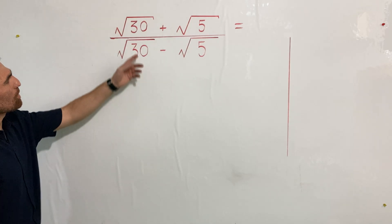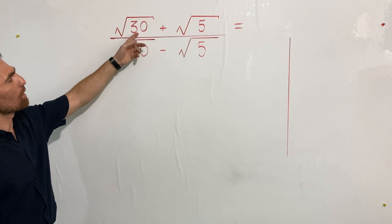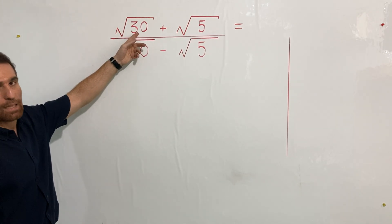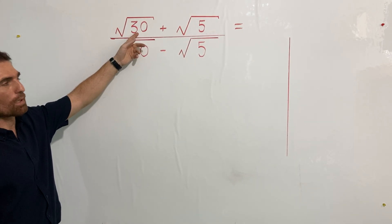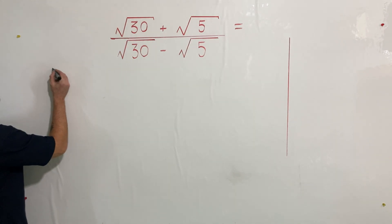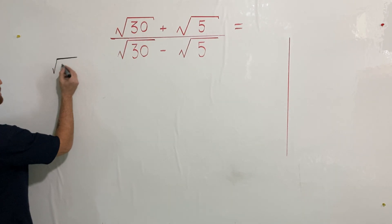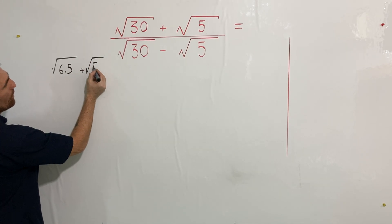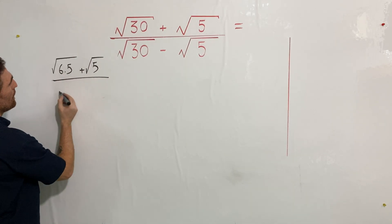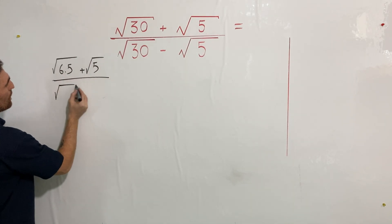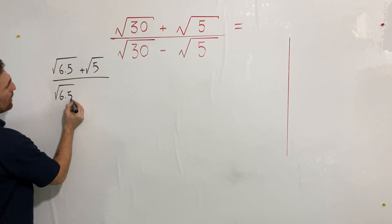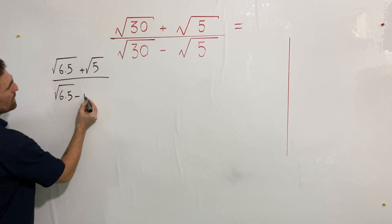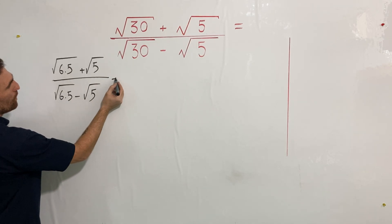As you know, square root of 33 can be written as a product of 6 and 5 — square root of 6 and 5. So let me rewrite it: square root of 6 times 5 plus square root of 5, over square root of 6 times 5 minus square root of 5.